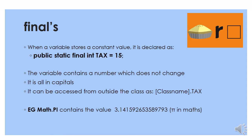Final variables — which is a contradiction in terms — but when a variable stores a constant value, it is declared as public static final. For example, if it's an integer: int TAX = 15. The variable contains a number which does not change. The variable name must be all in capitals and it can be accessed from outside the class as ClassName.TAX. An example is Math.PI, which contains the value 3.141592653589793 — a constant representing pi in maths.